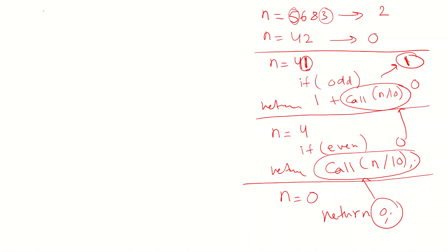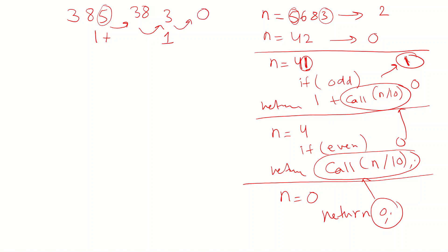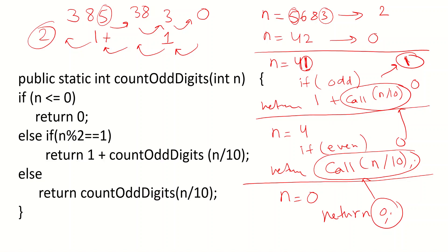Take the number 385. Always check: if the digit is odd, say 1; if not, just continue. The 5 is odd, so say 1 and continue — n becomes 38. 38 is even, so say nothing (zero) and continue — n becomes 3. The 3 is odd, so say 1 and continue — n becomes 0. End: 0 + 1 + nothing + 1 = 2. We found two odd digits, which is correct.